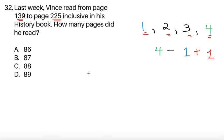So in this example, since Vince read from page 139 to 225, the number of pages he read should be equal to the difference, and then we add 1 to the difference. So 225 minus 139 is equal to 86, and then we don't forget to add 1.